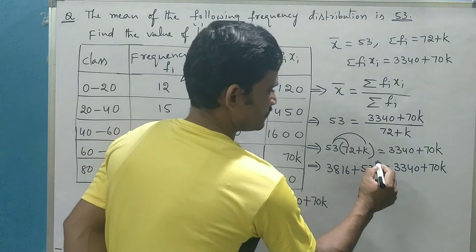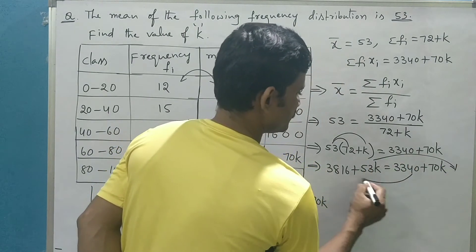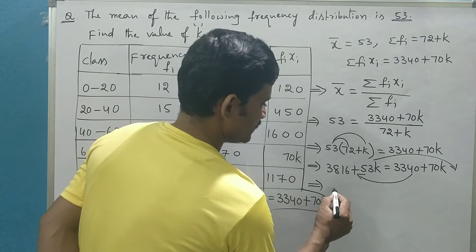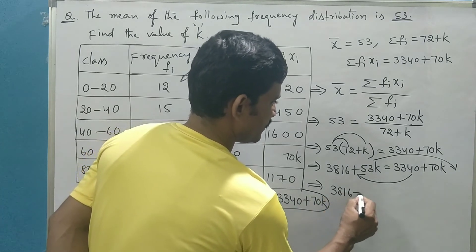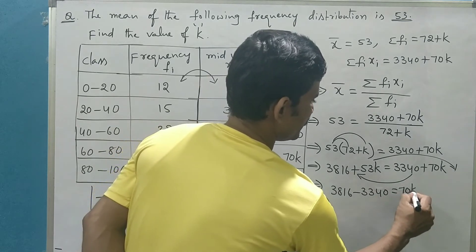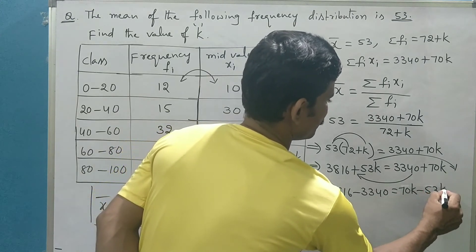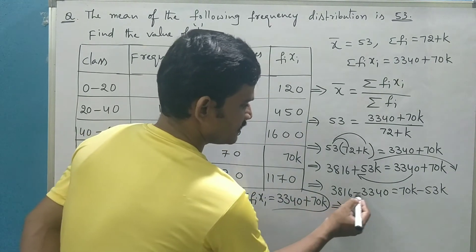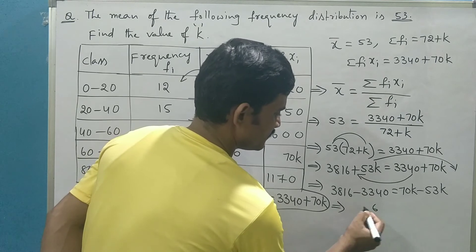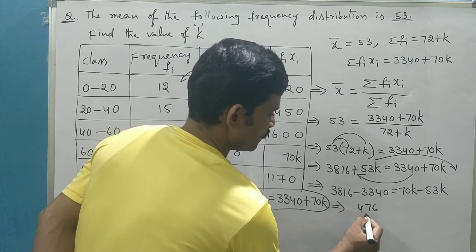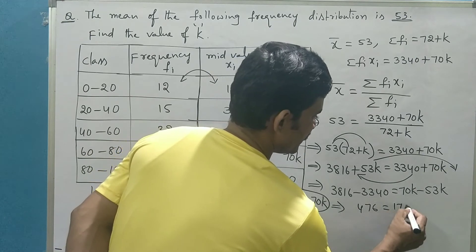Let us transpose variables into RHS, constants into LHS. That is 3816 minus 3340 is equal to 70k minus 53k. That is difference of these two, 476 is equal to 17k.